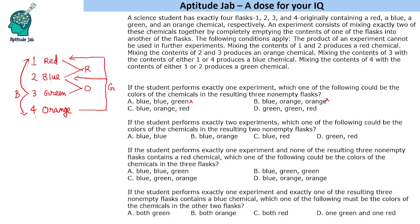If we mix green and orange, we will get blue, blue, and red - again not an option. So three options are eliminated, and the answer must be green, green, red. Let us verify: one green remains intact, and another green can be obtained by mixing flask 4 (orange) and flask 2 (blue). Mixing 2 and 4 gives green, red from flask 1 remains intact, and green from flask 3 remains intact. So this is a possible resulting color combination.